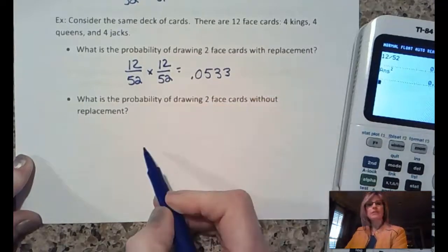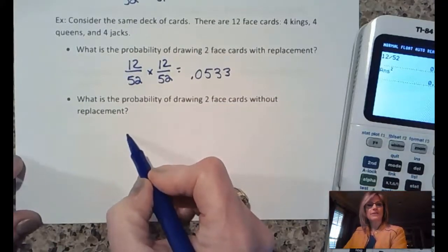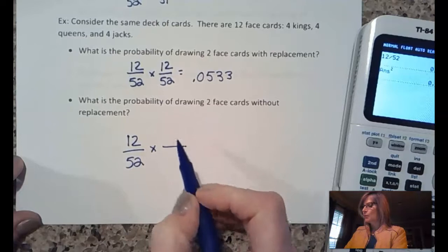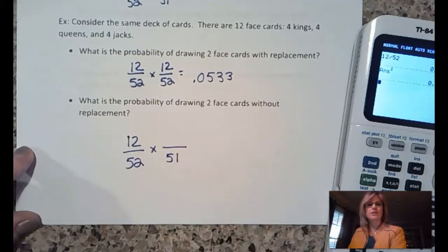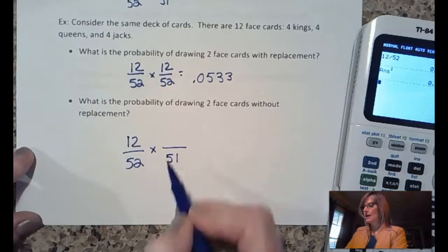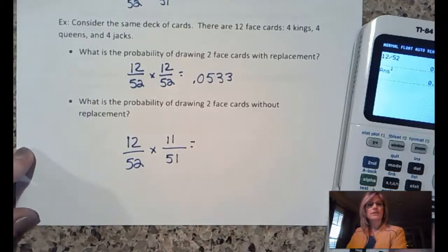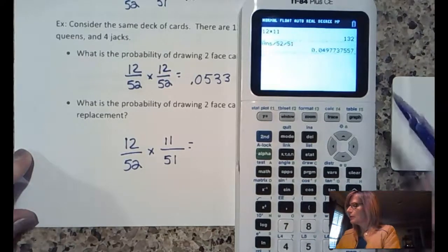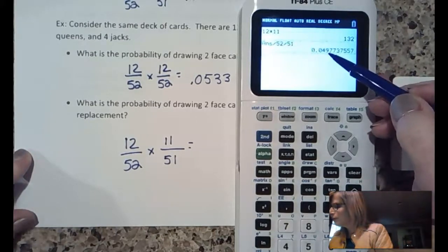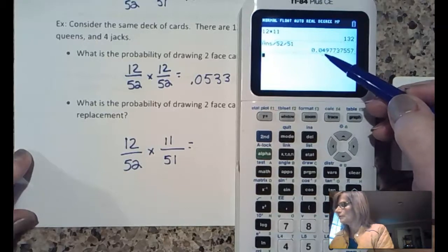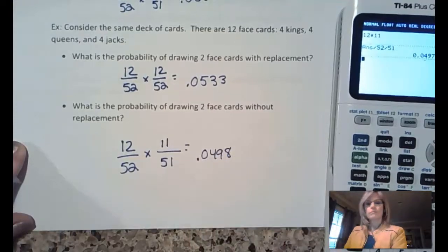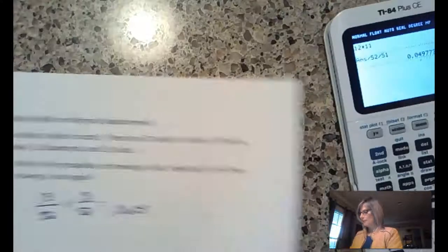Okay, so this time let's do without replacement. We'll have a face card. Only this time we don't put it back. So, there's only 51 cards to choose from the second time, and there are only 11 face cards that are left. 0.0498. So, with replacement, without replacement.